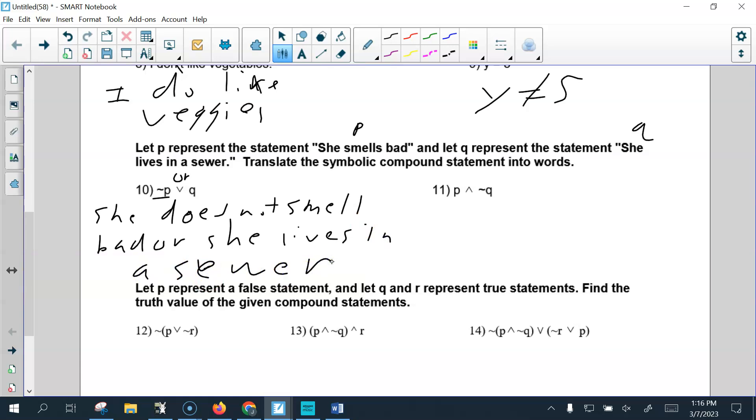11. P. She smells bad. We just write it as we see it. This is and. Not Q. She does not live in the sewer.